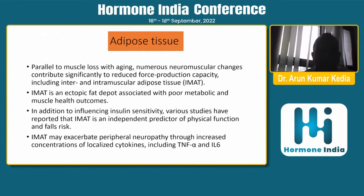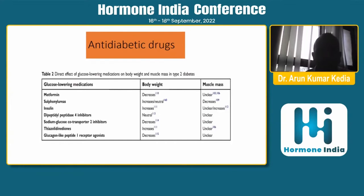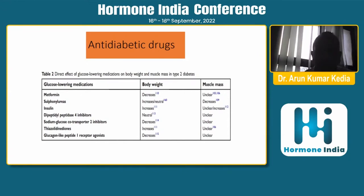Adipose tissue infiltration into muscles is another common issue — sarcopenic obesity is very common in diabetic patients. Inter- and intramuscular adipose tissue is ectopic fat associated with poor metabolic outcomes, decreased insulin sensitivity, and is an independent predictor of poor physical function and falls. It also increases localized cytokines leading to muscle dysfunction. Regarding anti-diabetic drugs, insulin is the only anabolic drug, and some studies show metformin may be anabolic, but the rest have not shown positive effects on muscle mass.